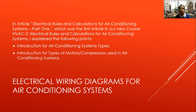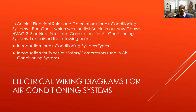In this article on electrical rules and calculations for air conditioning systems, Part 1 — which is the first article in our new course, HVAC 2 — we cover electrical rules and calculations for AC systems and explain the following points. We have a general introduction for AC system types and introduction for types of motors, compressors, and air conditioning units. The electrical wiring diagram for air conditioning system is our title.